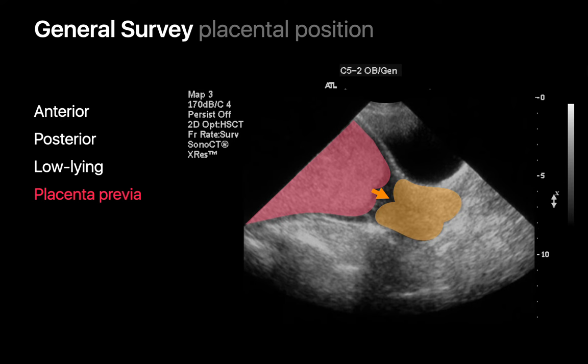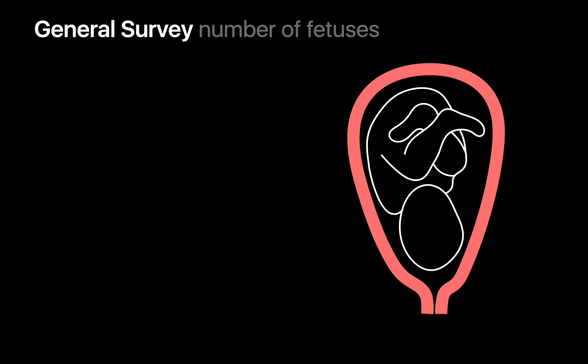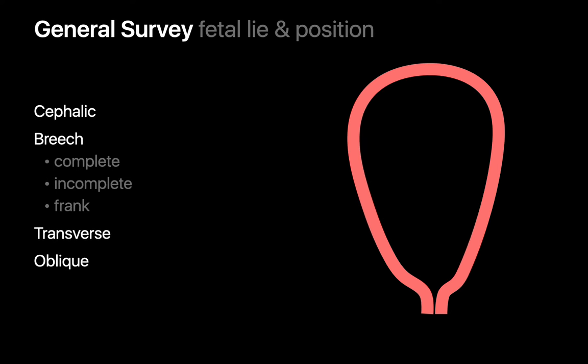Placenta previa occurs in about half a percent of pregnancies and can be associated with many serious complications, including maternal hemorrhage before or after childbirth, intrauterine growth restriction, fetal hypoxia, and fetal death. After inspecting the placenta for any other anomalies, our general survey moves on to an assessment of the number of fetuses within the uterus and then the fetal lie and position.